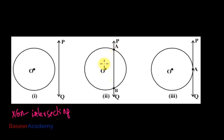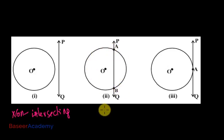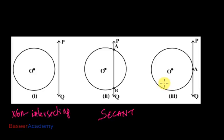Here in the second figure, the line PQ is intersecting the circle at two points A and B. Then this line PQ is known as a secant. So when the line PQ and the circle have two common points A and B, then the line PQ is known as a secant.